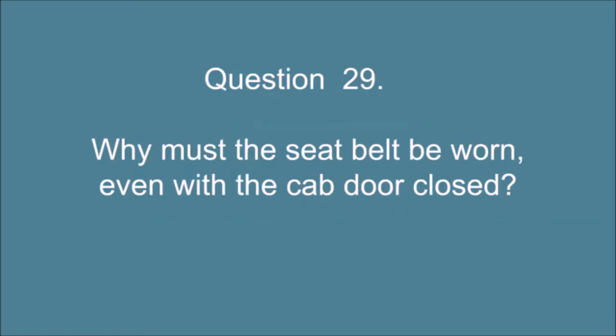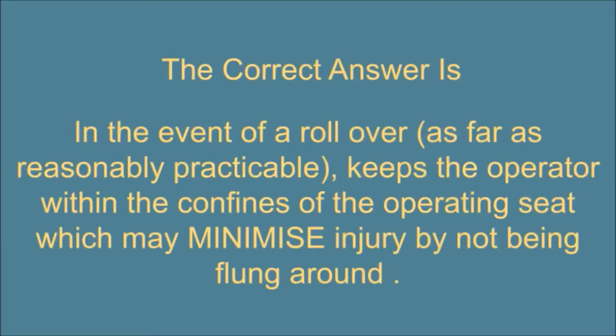Question 29. Why must the seat belt be worn, even with the cab door closed? The correct answer is, in the event of a rollover, as far as reasonably practicable, keeps the operator within the confines of the operating seat which may minimize injury by not being flung around.